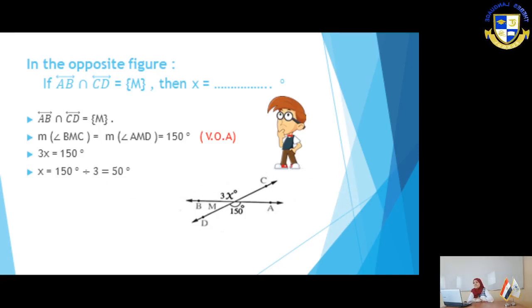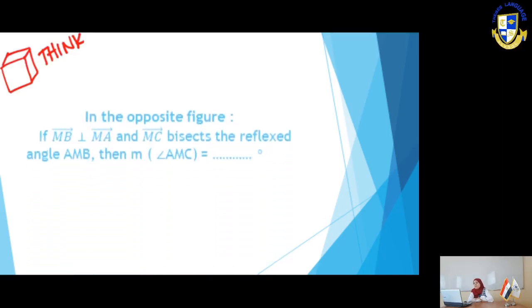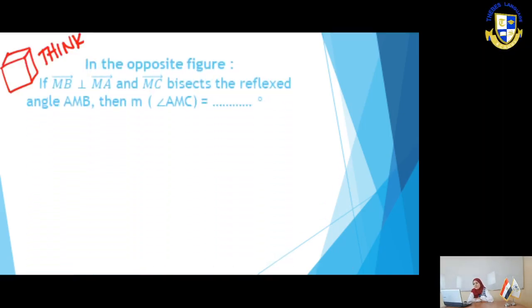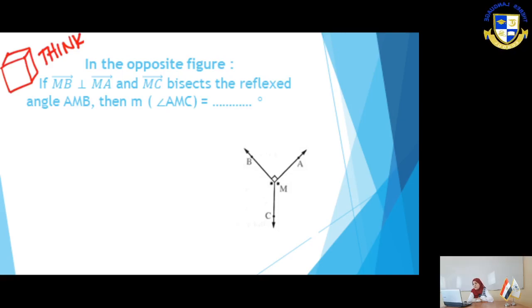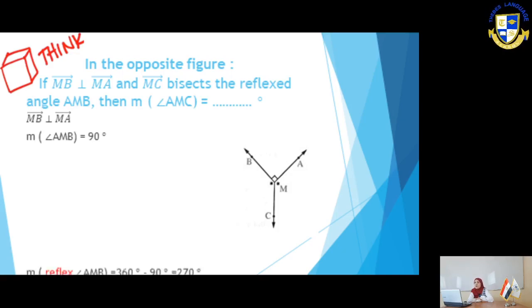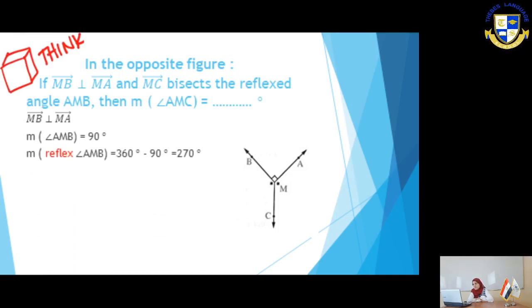In the opposite figure, MA is perpendicular to MB. If we have two perpendicular lines, they form a right angle measuring 90 degrees. Ray MC bisects the reflex angle AMB. The reflex angle is an angle whose measure is more than 180 and less than 360 degrees.